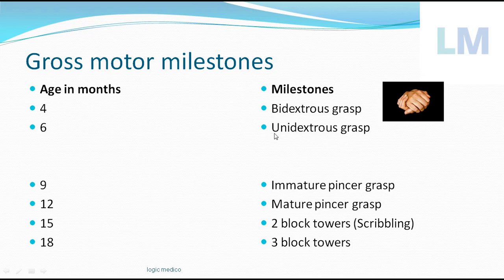Unidextrous grasp: 'uni' means one, 'dextrous' means hand. At six months of age, if you give the child the same toy, the child uses only one hand to catch hold of that object — no longer using two hands.